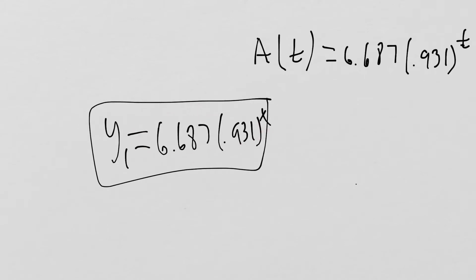Y1 equals 6.687 times 0.931 raised to the X, because your calculator will only recognize X as the independent variable. So we're going to make it X instead of T.